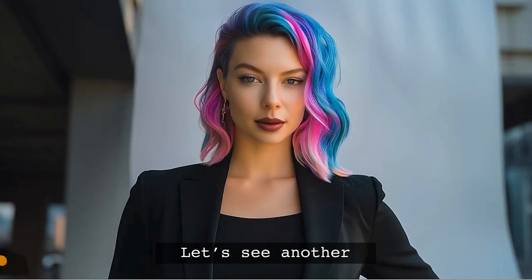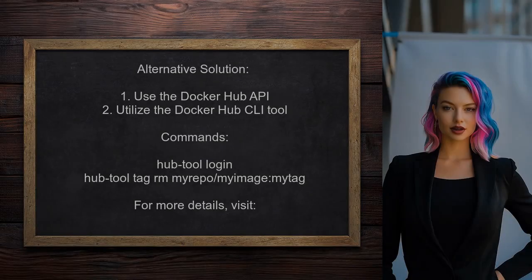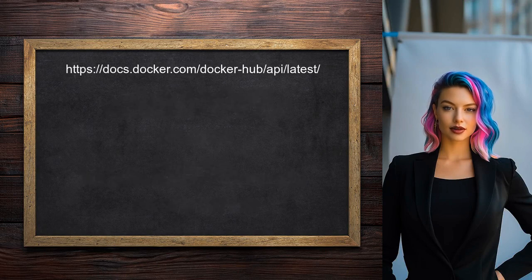Let's see another perspective. An alternative approach to deleting a Docker image from Docker Hub via the command line involves using the new Beta Docker Hub API. You can also utilize the Docker Hub CLI tool.